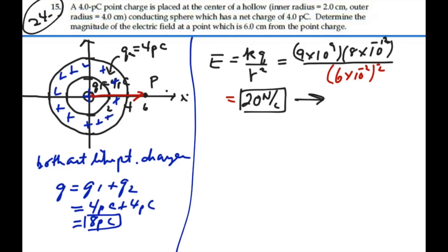So twenty newtons per coulomb in positive x direction as I've drawn it. So that's our answer, twenty newtons per coulomb.